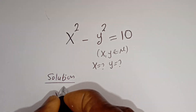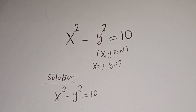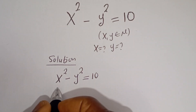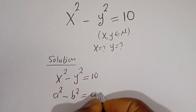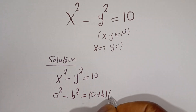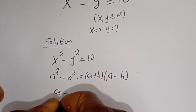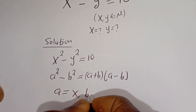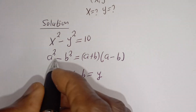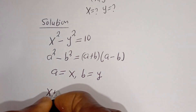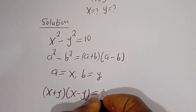We have X squared minus Y squared is equal to 10. This is in the form of a perfect square difference. That is, A squared minus B squared is equal to (A plus B)(A minus B). Where A is equal to X and B is equal to Y, this can be written as (X plus Y)(X minus Y) is equal to 10.